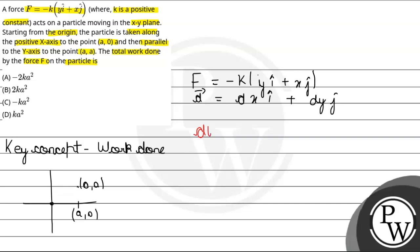aur hamara jo work done hoga, small work done dw hum likh sakte hai, f vector dot d vector isko calculate karenge, to hamare paas aayega, minus k into y dx plus x dy.